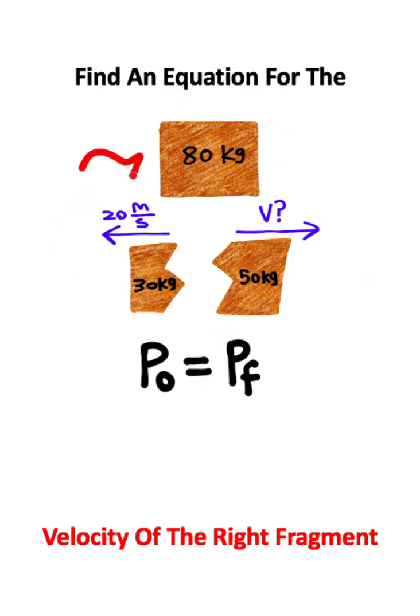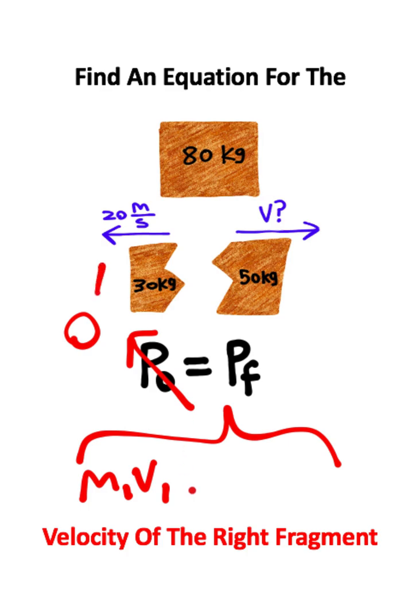But if momentum is mass times velocity, and we don't have a velocity at the start, that means that the initial momentum is going to be zero. And the final momentum is going to be the mass and velocity of the first fragment, plus the mass and velocity of the second fragment.